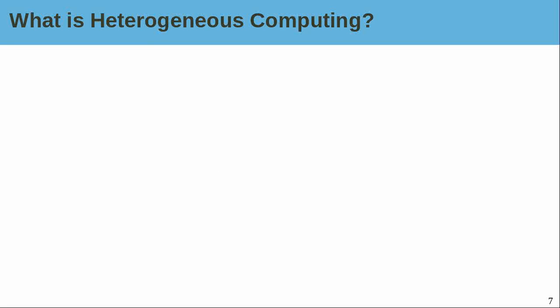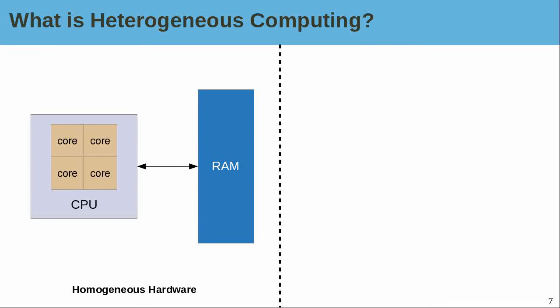So this is the pitch about OpenCL. Why should you care as an application developer? To answer this, we need to understand what heterogeneous computing is. Before heterogeneous computing, it was homogeneous computing. Homogeneous hardware has this notion that you have a single CPU device, multiple cores potentially, but they're all running the same instructions from the same vendor. You don't have an AMD and Intel core on the same CPU.